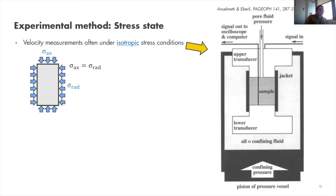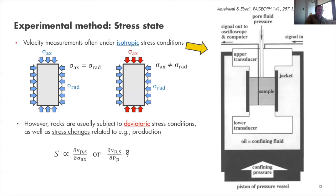Deviatoric stress conditions also include stress changes related to production and pore fluid pressure decrease. What happens to P-wave velocity as you decrease pore pressure, for example? Deviatoric stress condition means the axial stress is not the same as the radial stress — for example, a larger axial stress (overburden pressure) compared with the radial stress, which is the local stress field in many cases.